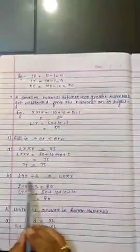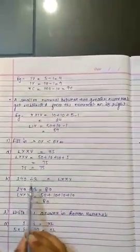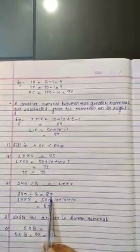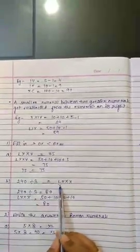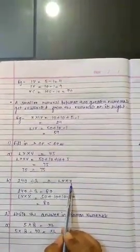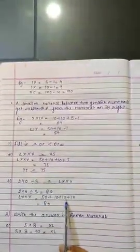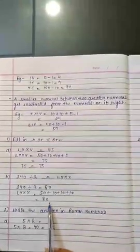B part: 240 divided by 3. Solve this. 240 divided by 3, the answer will be 80. And on the right hand side, LXXX. Solve this also. 50 plus 10 plus 10 plus 10, the answer will be 80.